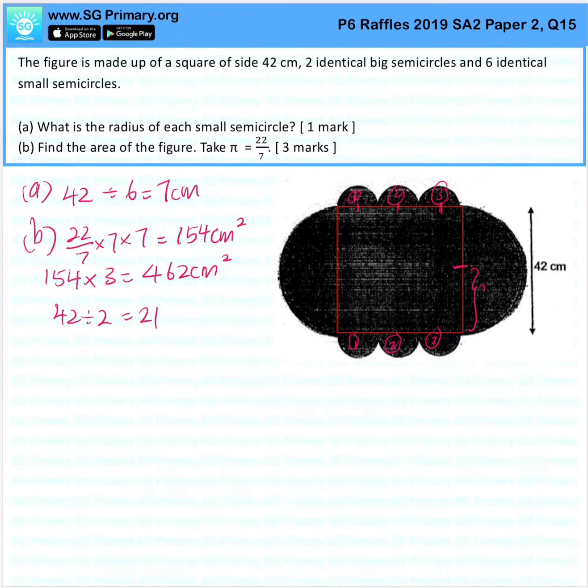which is 21 cm. So now we can find this big circle which is pi times R times R will give us 1386 cm².